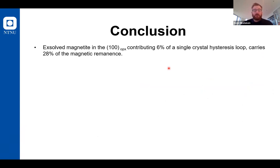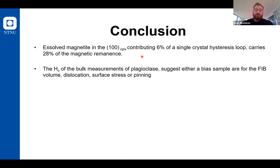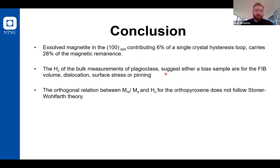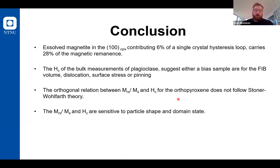The concluding remarks are that even though the magnetites exsolved in 100 contribute a very low overall percentage of the overall hysteresis loop, they actually carry a significant amount of the magnetic remanence. The coercivity, as we saw in plagioclase, can have a very similar overall correlation. However, it can suggest that we have either sampling bias, dislocation surface stress, or magnetic pinning, which we did not include in our calculations. An orthogonal relationship between MR over MS, as seen in the OPX, does not follow Stoner-Wohlfarth theory, but it does suggest that MR over MS and the coercivity are sensitive to either the particle shape or the domain state of the particle.